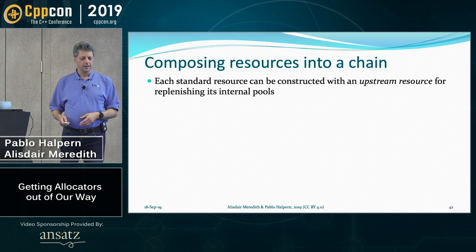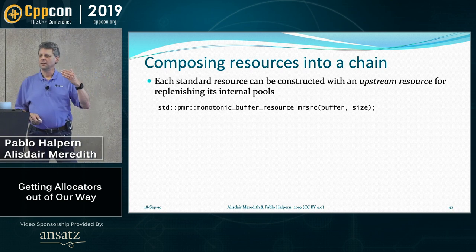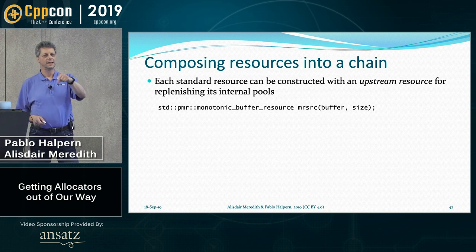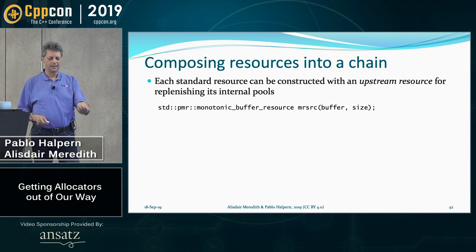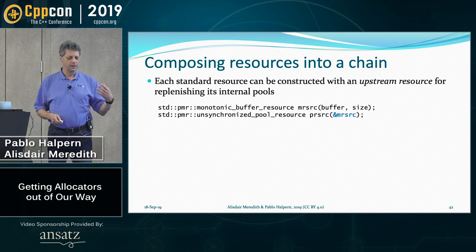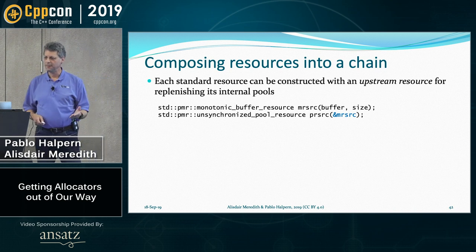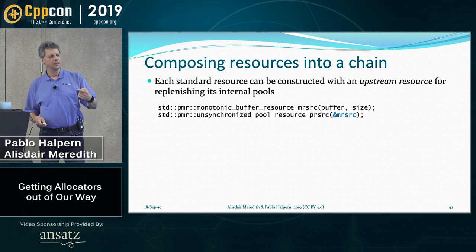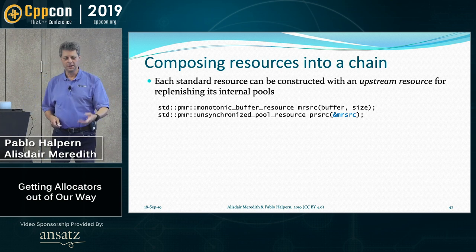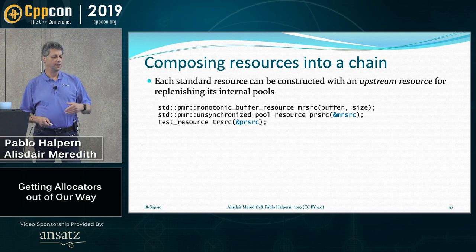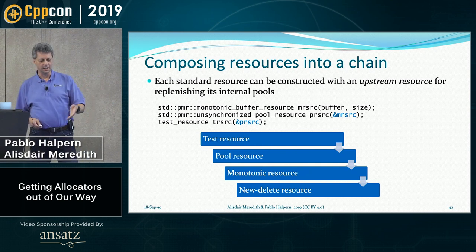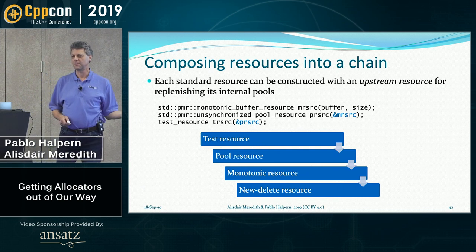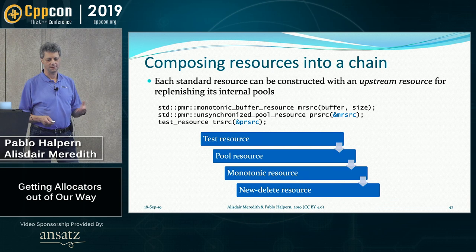Another thing to mention is that these resources can be chained — you can specify an upstream resource for each resource when you construct it, saying: when you run out of memory in your pool, where are you going to get memory from? For example, you could create a monotonic_buffer_resource, then create an unsynchronized_pool_resource on top of it, which means when the pool resource needs to allocate another chunk it gets it from the monotonic buffer. And you could create a test resource on top of the pool resource. At the bottom of the chain is the new_delete_resource, because that's what you get when you don't specify any other upstream resource.